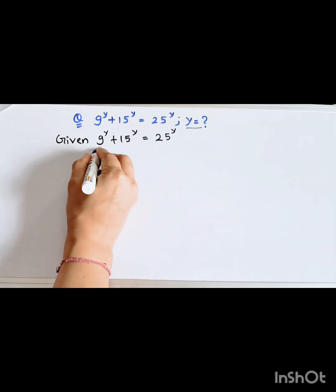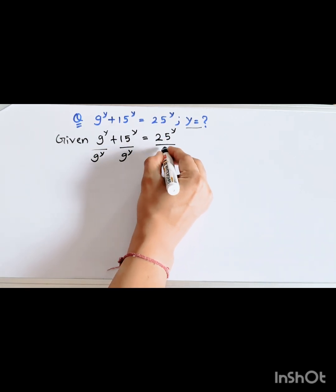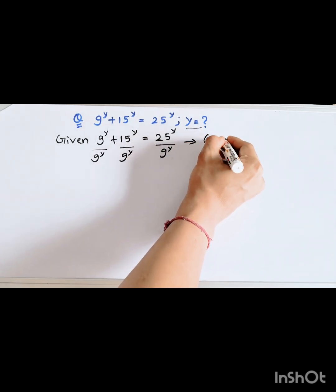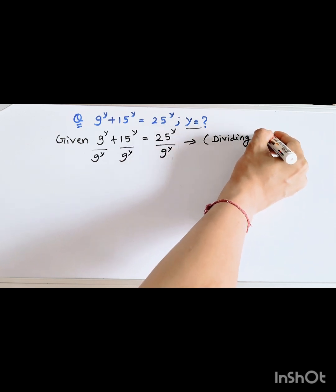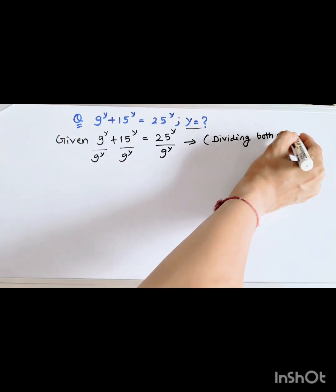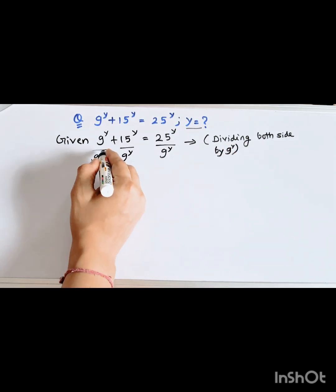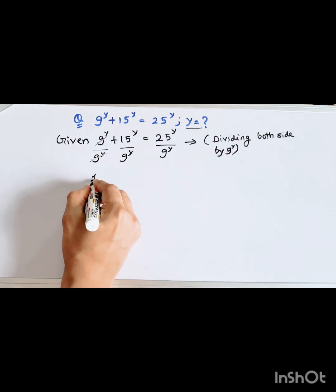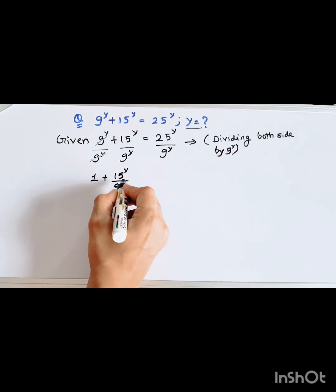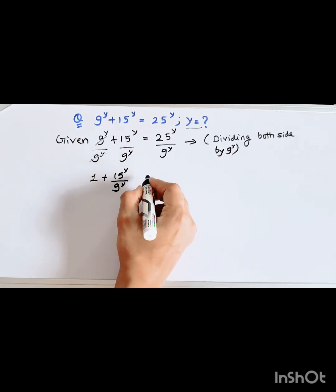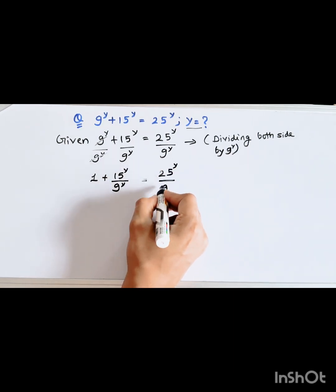We will divide both sides by 9 to the power y. So 9 to the power y cancels, giving us: 1 plus 15 to the power y divided by 9 to the power y, equal to 25 to the power y divided by 9 to the power y.